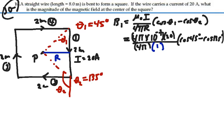Okay, so get rid of the 4 pi's here. And this is 2 times 10 to minus 6. Cosine of 45 degrees is square root of 2 over 2. And the cosine of 135 degrees is negative square root of 2 over 2.